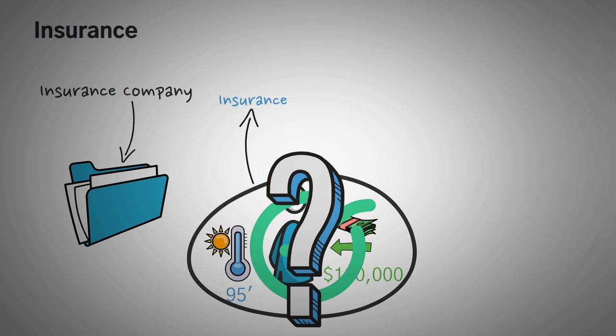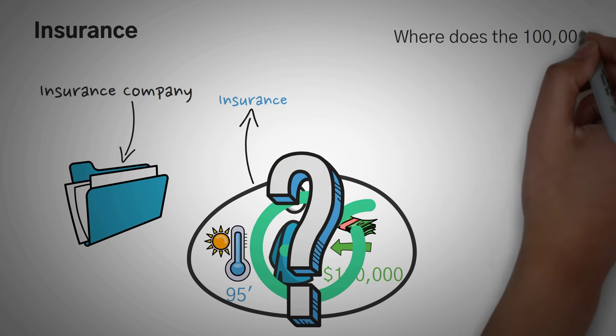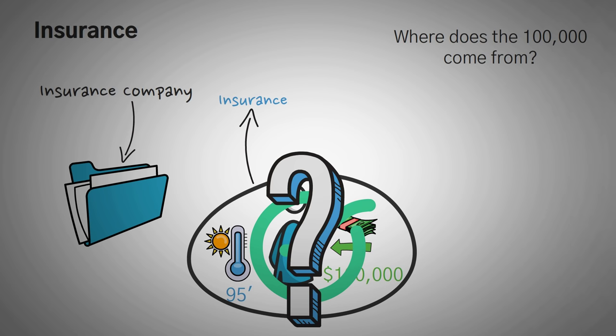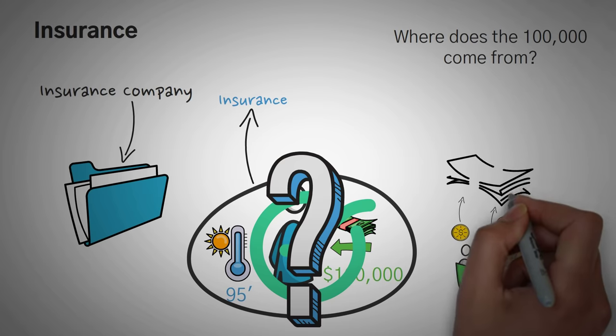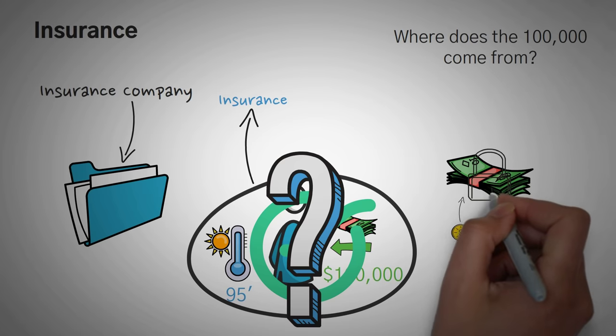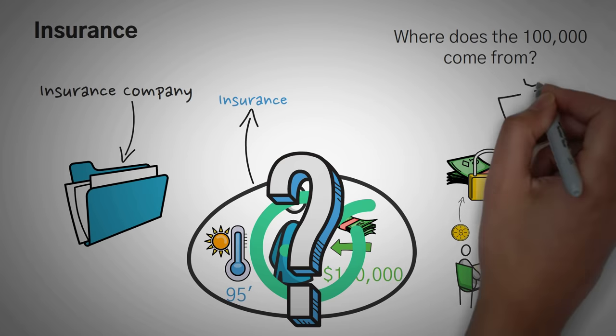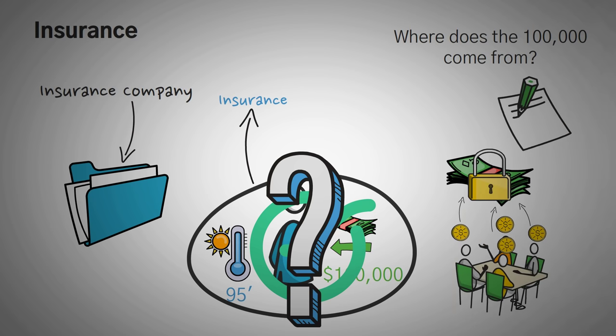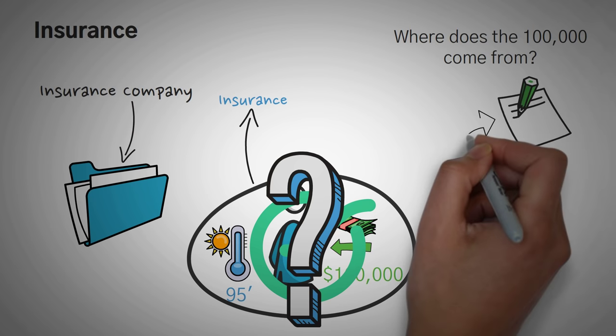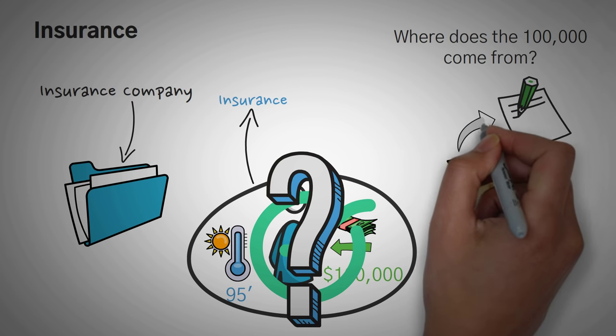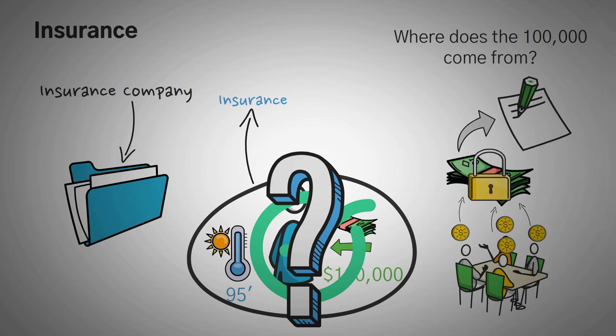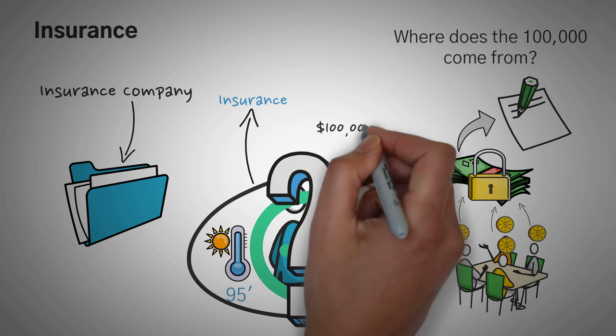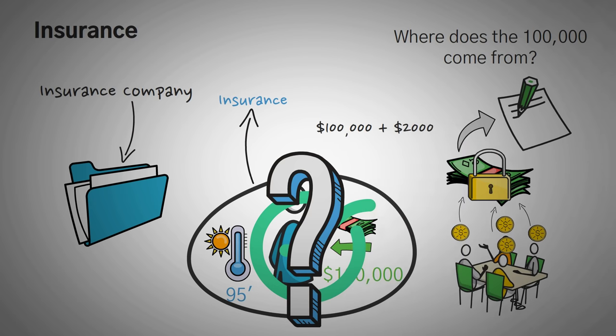Now another question you might be wondering is, where does the initial $100,000 come from? Well, you'd have to imagine that investors who wanted to start that insurance company would have to pool their money together to be able to front it. In fact, they would have to lock it up in that smart contract whenever Farmer John buys it. They cannot do anything with those funds until the end of the summer, because at that moment, the smart contract owns that money. Then at the end of the summer, if the insurance has not been paid out to Farmer John, the initial investment of $100,000 plus Farmer John's $2,000 premium get paid back to the investors.